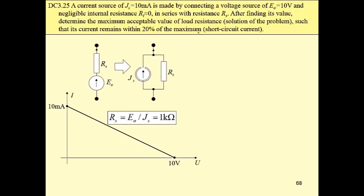So this is the circuit. We have a source, and then in series we will connect some resistance to obtain a new source expressed by Norton equivalent with a short circuit current of 10mA.